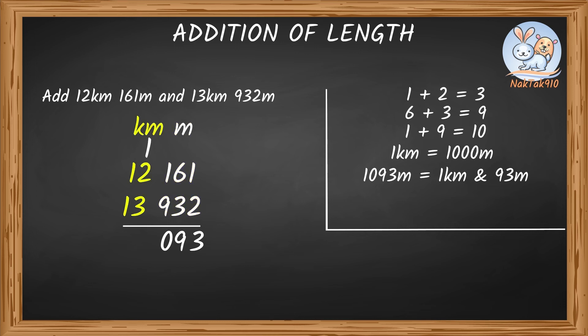Let's move to the kilometers column and add it. 1 plus 2 plus 3 is 6. 1 plus 1 is 2. So the sum of 12 kilometers 161 meters and 13 kilometers 932 meters is 26 meters 93 centimeters.